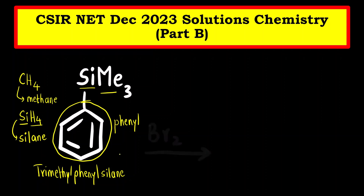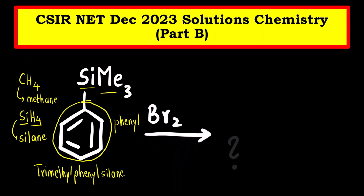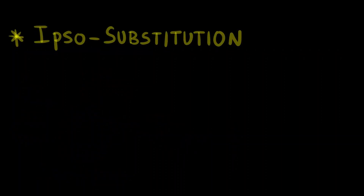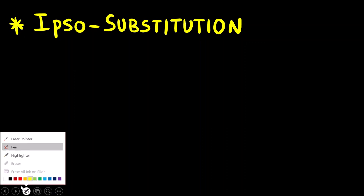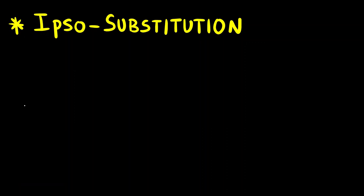The reaction is: we have to react it with bromine, that is we have to do bromination, and we have to write down the product. This reaction is based on a concept called ipso substitution. The first question that comes to our mind is: what exactly is ipso?